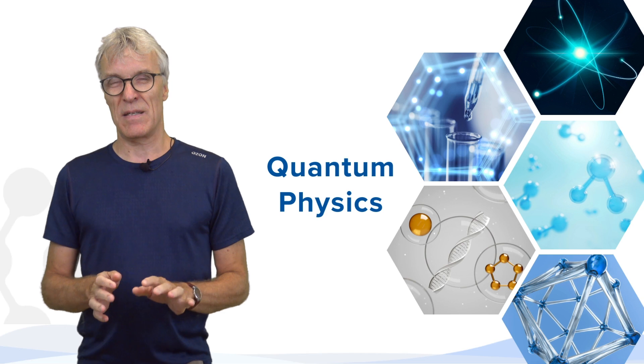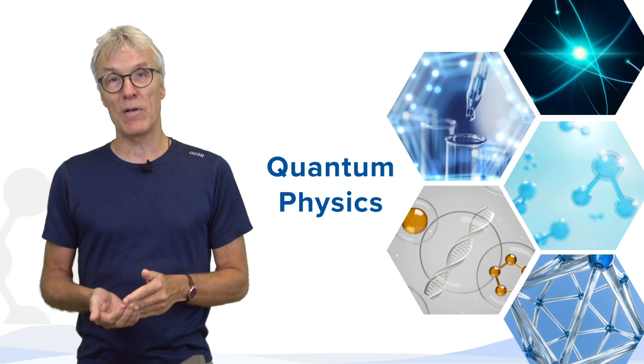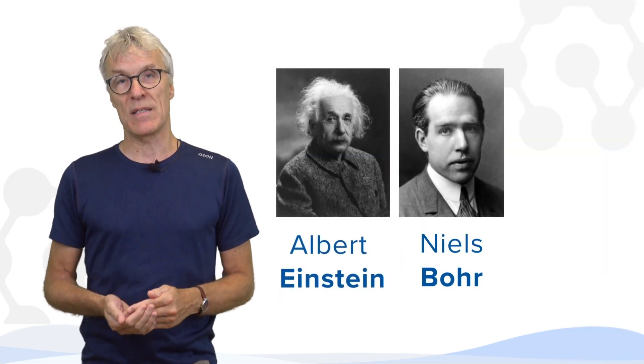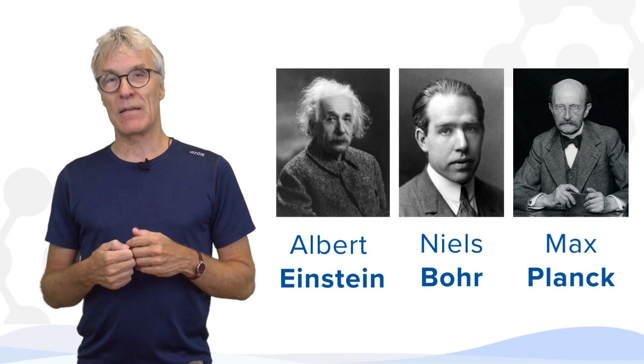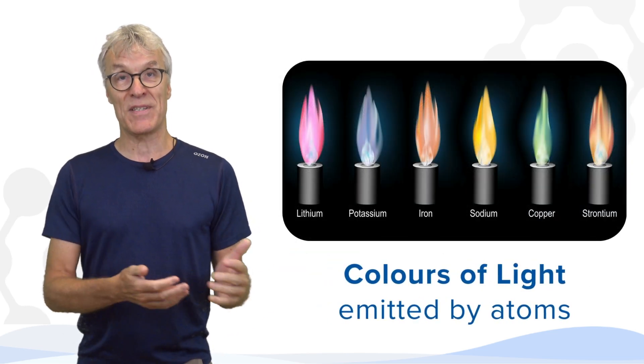Quantum physics is about describing nature. It's phenomena that happens around us. And one of the most important phenomena described early by Einstein and Bohr and German scientist Max Planck was actually the colors of light emitted by atoms.